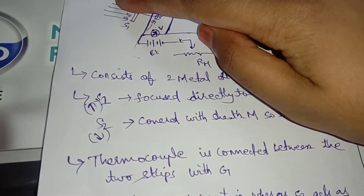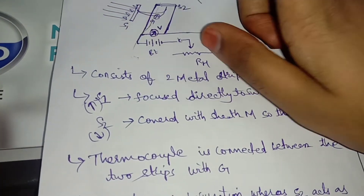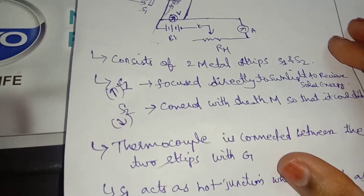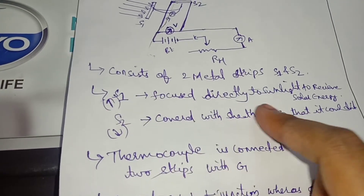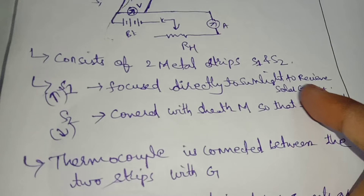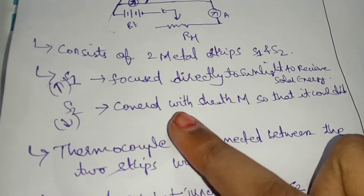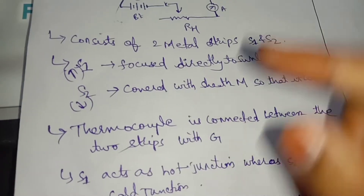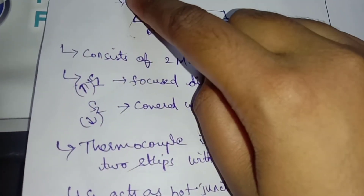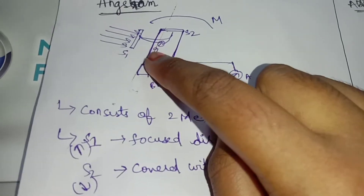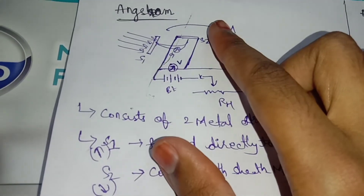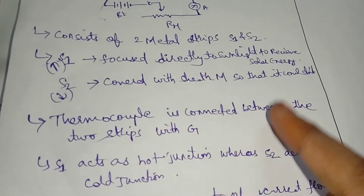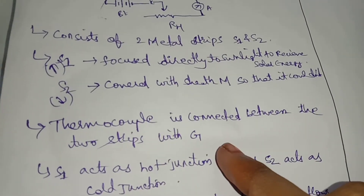This S1 is exposed to the sun and receives the highest temperature from the sun. S2 is at a lower temperature. S1 is focused directly to the sunlight to receive solar energy, while S2 is shaded so that it cannot receive any solar energy. S1 and S2 are both connected with the help of a galvanometer.